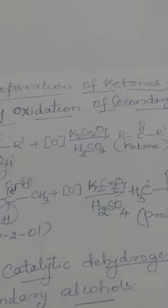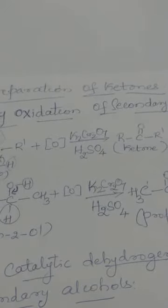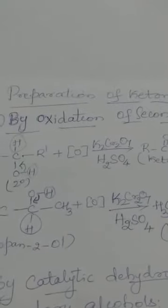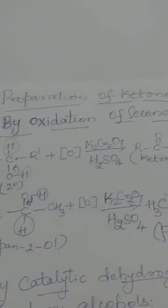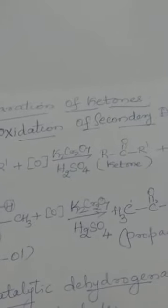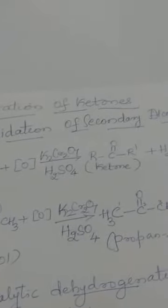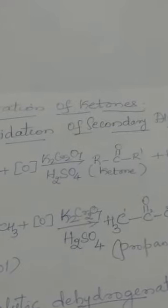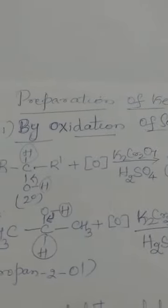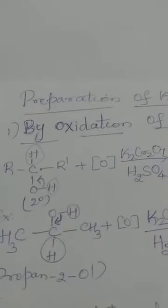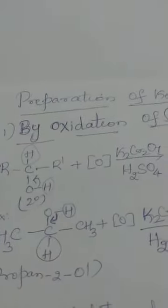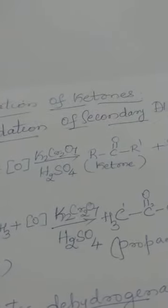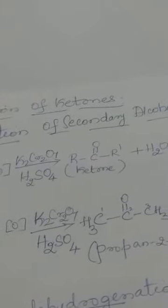As you all know, in case of aldehydes the first method of preparation was from oxidation of primary alcohols. Here, instead of a primary alcohol, we will be taking a secondary alcohol. So the first method of preparation is by oxidation of secondary alcohols.